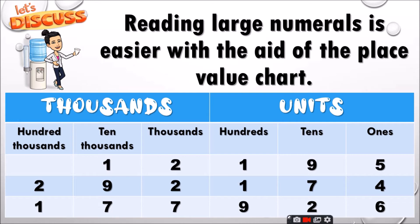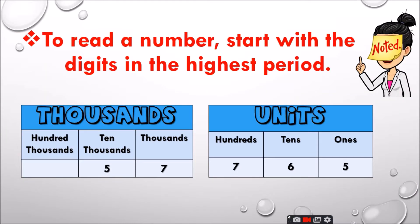Reading large numerals is easier with the aid of the place value chart. First thing, my dear students, to read the numbers, you need to start with the digits in the highest period. In this place value chart, the highest period is the thousands.